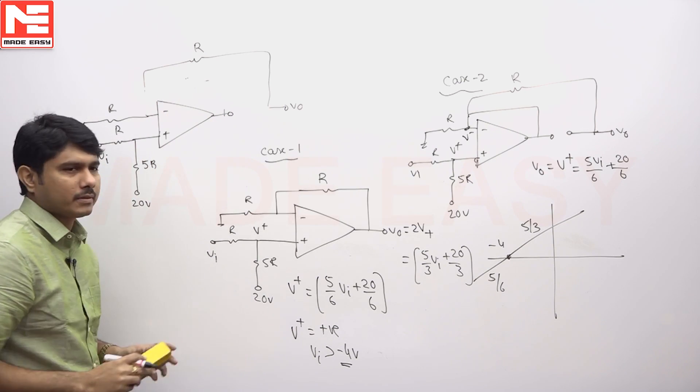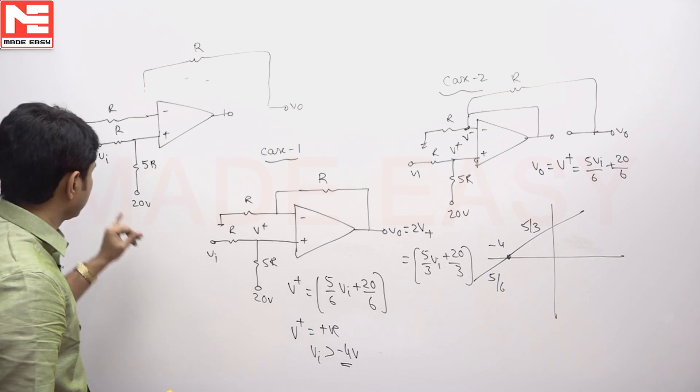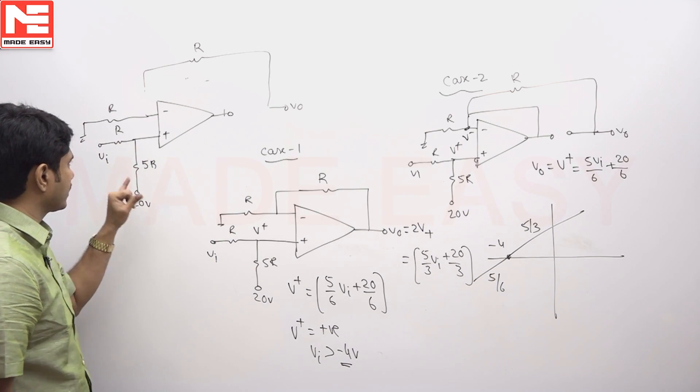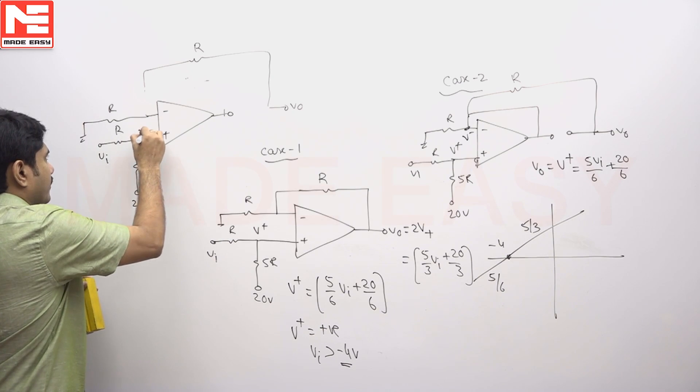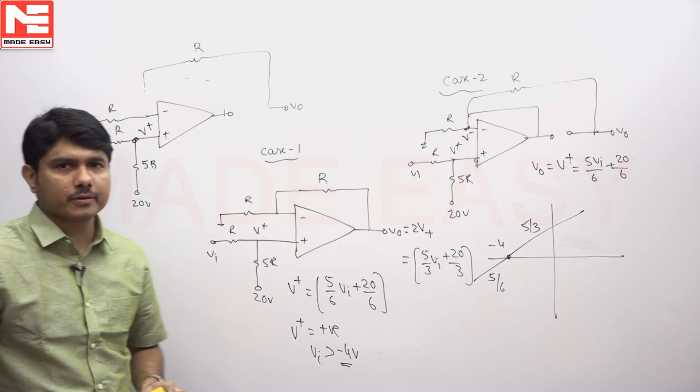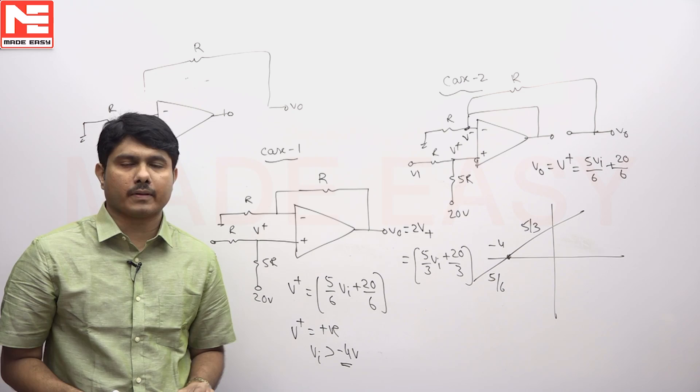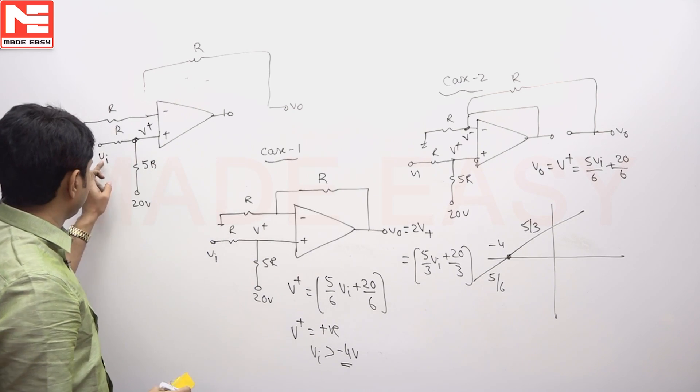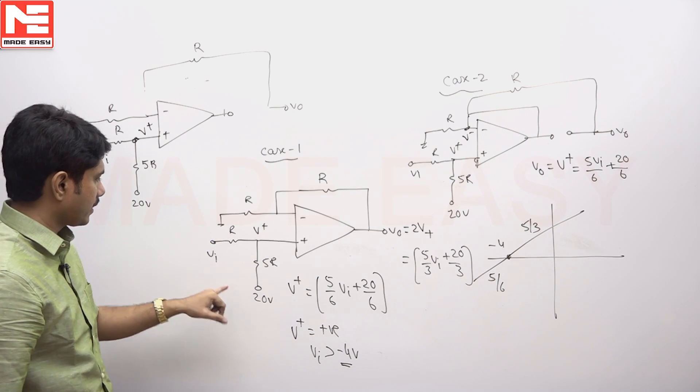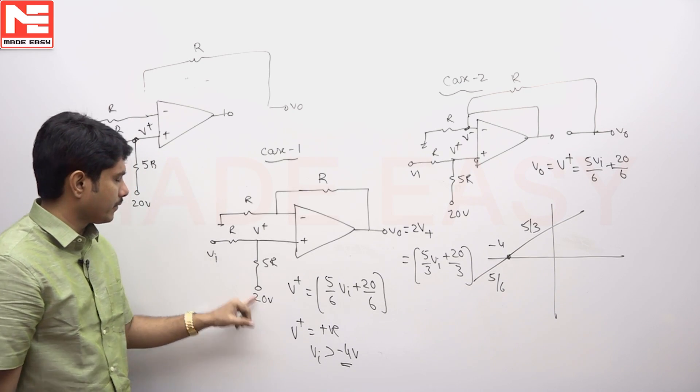So this is an open loop system op-amp. In this circuit he has given some network, but my input is here, V plus for positive connected systems. That is the input for the op-amp. So the network is VI, 20 volts, V plus.